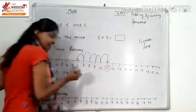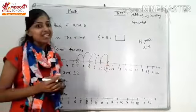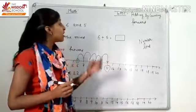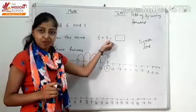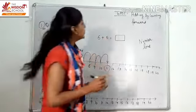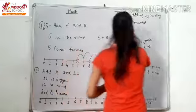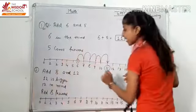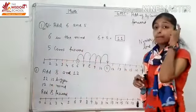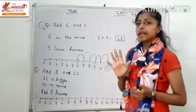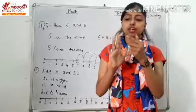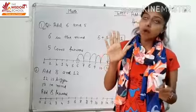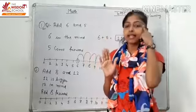So you have to keep six in mind. Then count the five forward: one, two, three, four, five. After six, what will come?